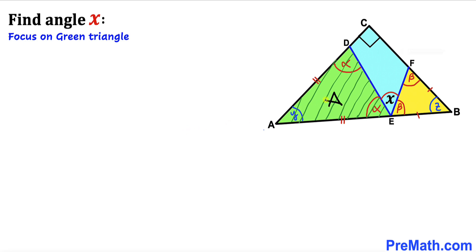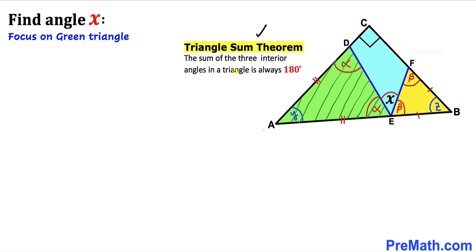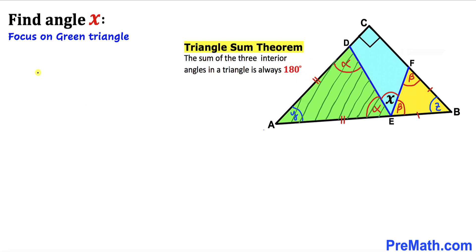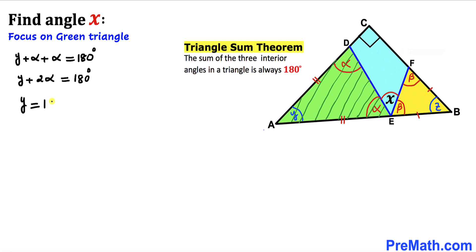Let's focus on the green triangle once again and recall the triangle sum theorem: the sum of the three interior angles in a triangle is always 180 degrees. So the sum of all three angles in this green triangle must be 180 degrees. That gives us Y plus alpha plus alpha equals 180 degrees, which simplifies to Y plus 2α equals 180 degrees, so Y equals 180 minus 2α. Let's call this Equation 1.